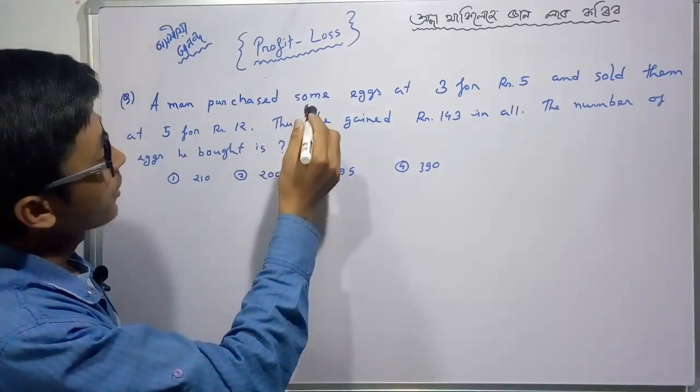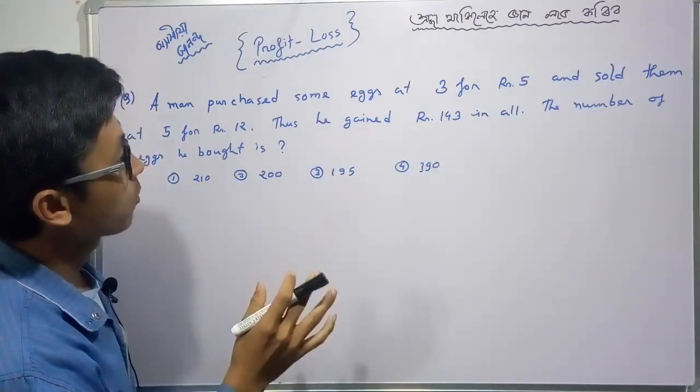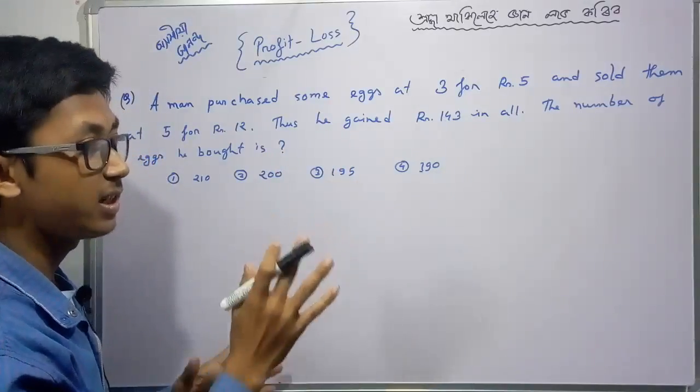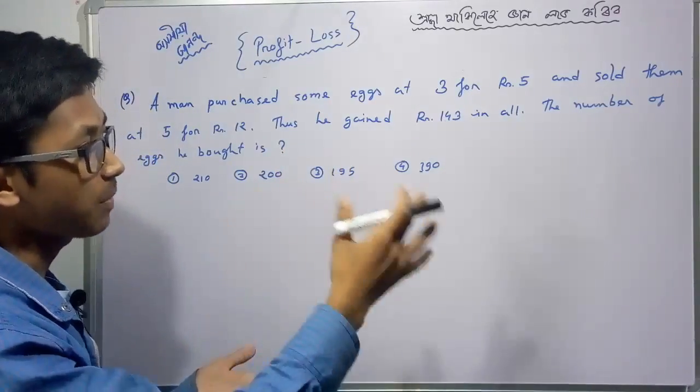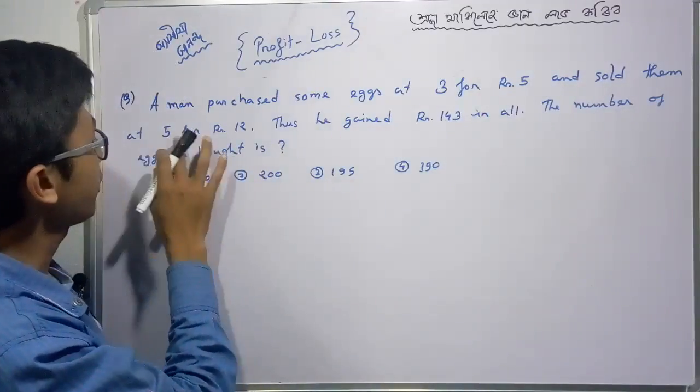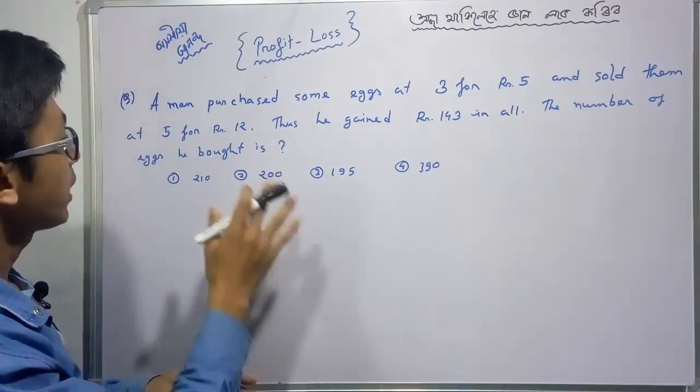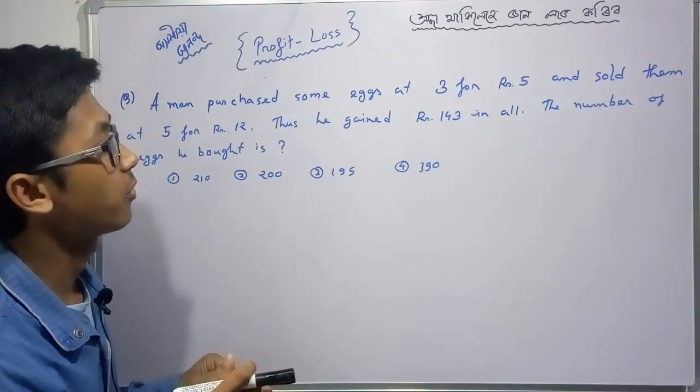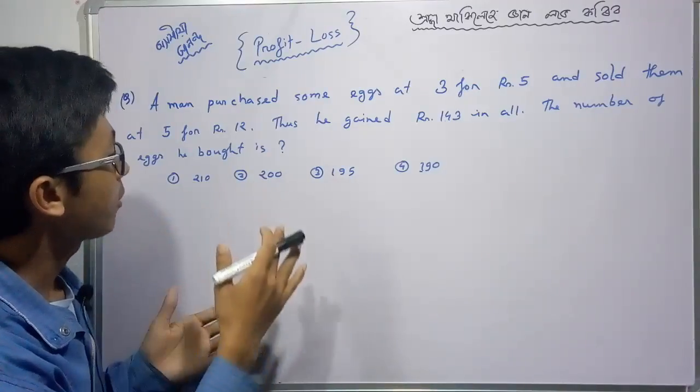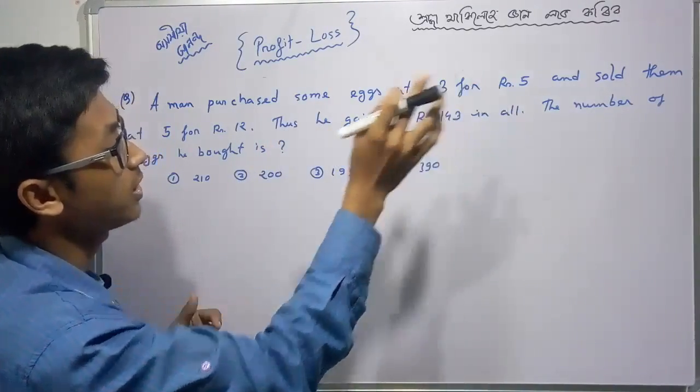A man purchased some eggs at 3 for rupees 5 and sold them at 5 for rupees 5. The question asks about the number of eggs to find the total profit of rupees 143 in all.